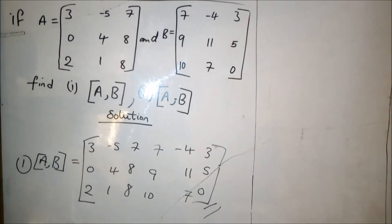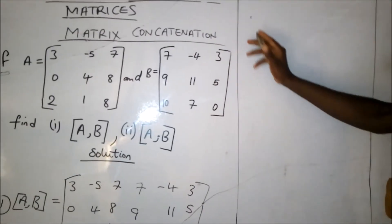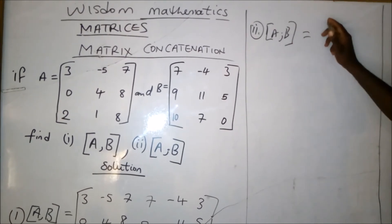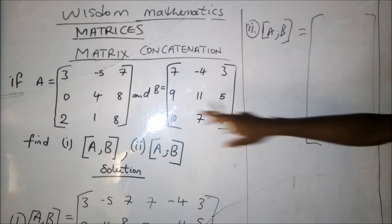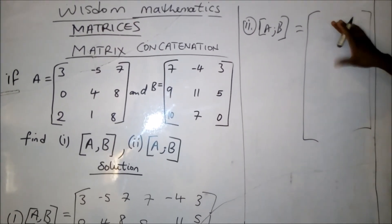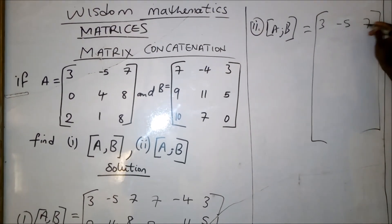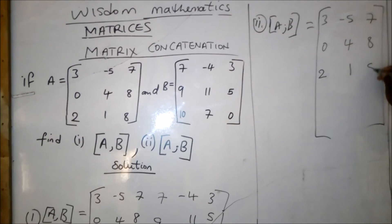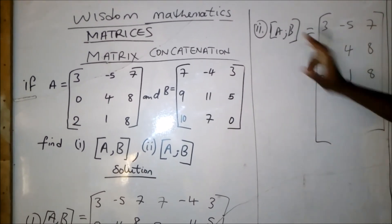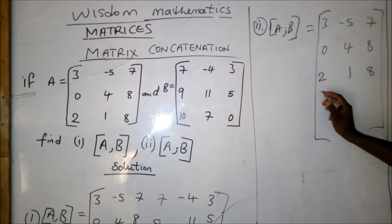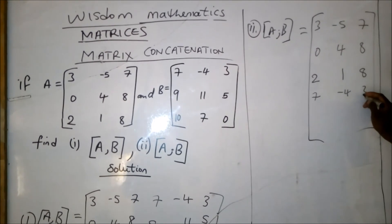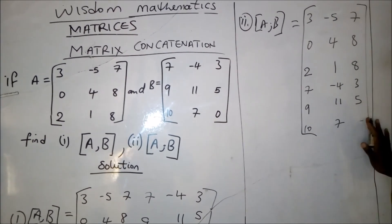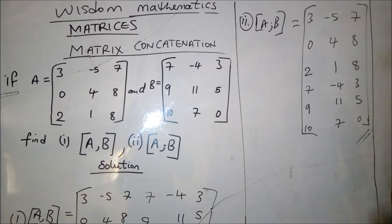For the vertical concatenation, A semicolon B is going to give us this matrix. Matrix A is first: 3, minus 5, 7, then 0, 4, 8, then 2, 1, and 8. Then we take the second matrix B underneath, so we have 7, minus 4, 3, 9, 11, 5, 10, 7, and 0. This is the answer to the second question.